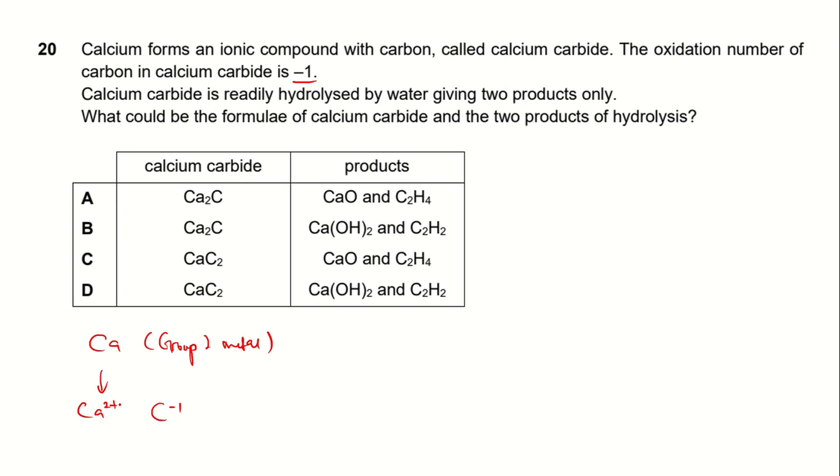So to balance the charge on the cation and form a zero charge compound, we are going to need 2 negative 1 carbide.